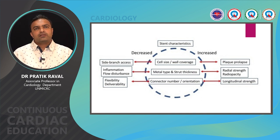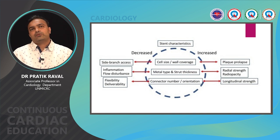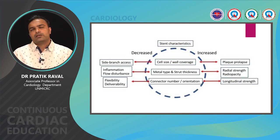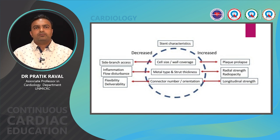It is easier said than done to incorporate all these characteristics, as improvement in one often causes deterioration of another. For example, improving side branch access requires larger cell size, but this reduces wall coverage and results in plaque prolapse. Reducing strut thickness reduces inflammation and flow disturbance but compromises radial strength and radiopacity. To improve flexibility and deliverability, connectors should be minimized, but this compromises longitudinal strength. The main challenge is achieving fine tuning — essentially a trade-off — between various stent design characteristics.